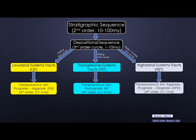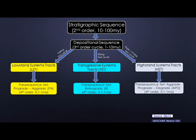Depending on the arrangement of smaller units within the depositional sequence, we call them parasequence sets. Parasequence sets are a higher-order component of the depositional sequence. When the sea level is falling, we have a set of parasequences called the progradational parasequence set, which makes up the lowstand systems track. At the phase where sea level is rising, we have retrogradational parasequence sets, which make up the transgressive systems track. And during the high and stable sea level phase, we have aggradational to progradational parasequence sets.